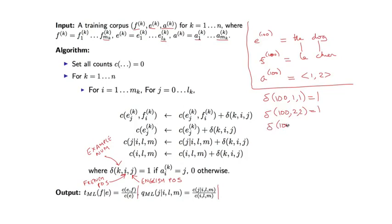And then finally delta 100, i, j is equal to 0 for all other i, j. So these deltas are actually quite simple. They just indicate which alignments are actually present.